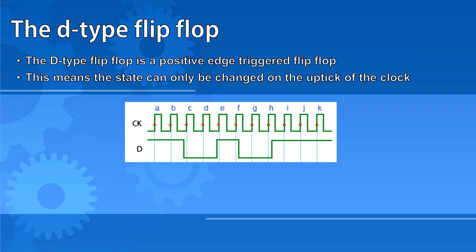You might be asked to draw the output for a D-type flip-flop given the clock signal and the control input signal. You'll do this by changing the signal in the output signal only on the uptick of the clock if the control input signal has changed.